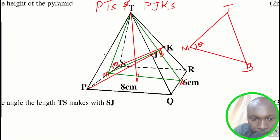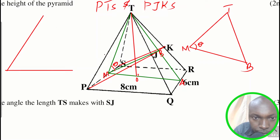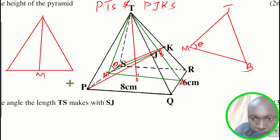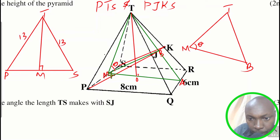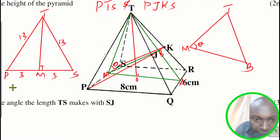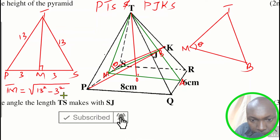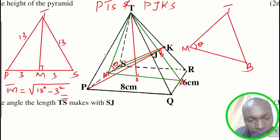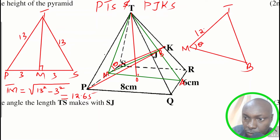To get TM, we extract the triangle with vertices M, S, P, and T. This triangle has a right angle, with PS equal to 6, so PM (the midpoint of PS) is 3. The slant sides are each 13. Using Pythagoras' theorem: TM = √(13² − 3²) = √(169 − 9) = √160 ≈ 12.65.